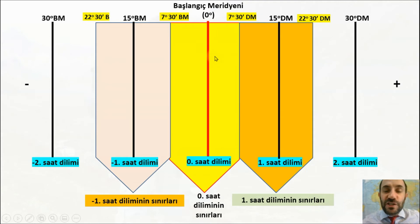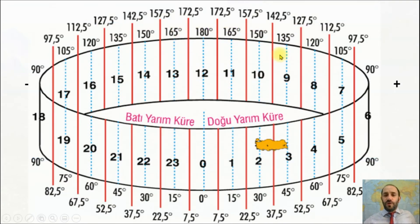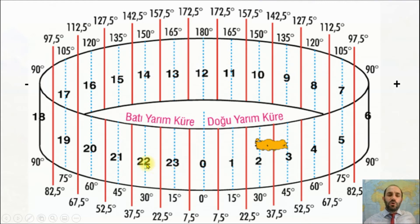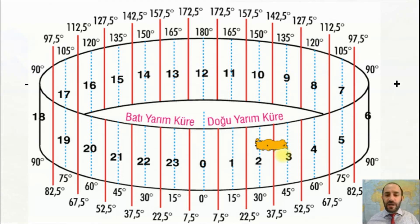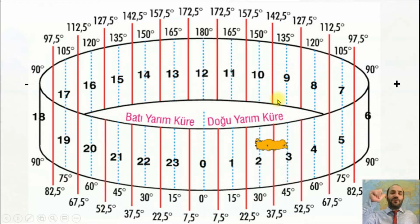Saat dilimlerini başlatırken Greenwich'in 7.5 doğu, 7.5 batısında başladığımızı unutmayalım. Türkiye, 26.45 derece doğu meridyeninde olması nedeniyle 2. ve 3. saat dilimindedir. Eskiden 30 ve 45 derece doğu meridyenini yaz ve kış saati olarak kullanıyorduk. Ancak 2015-2016 yılı itibariyle bakanlar kurulunun aldığı kararla artık 45 derece doğu meridyenini, yani 3. saat dilimini kullanıyoruz.